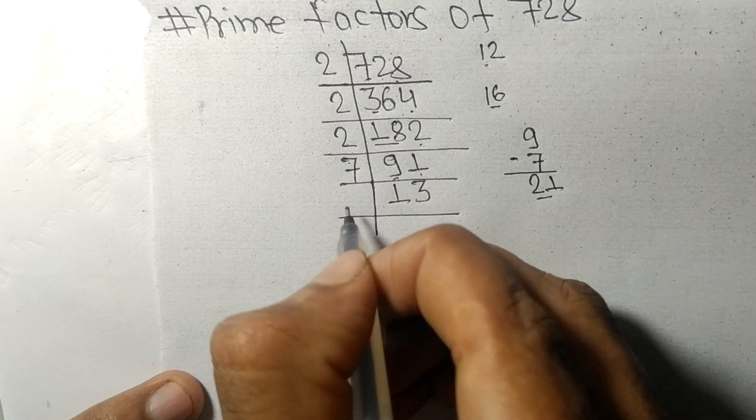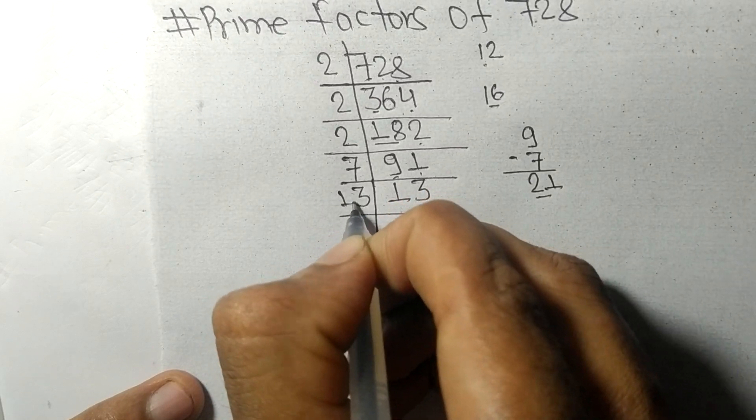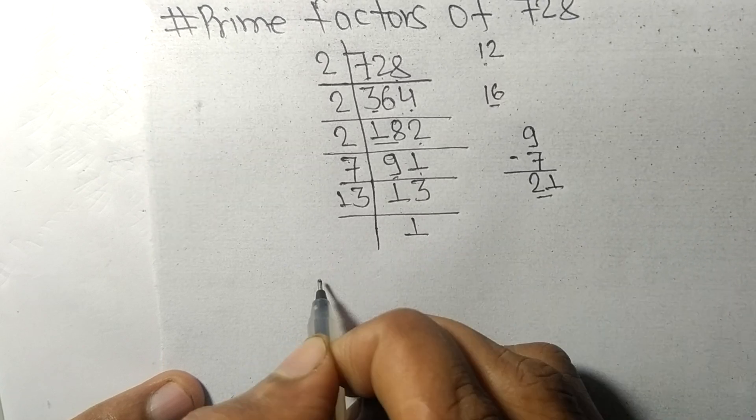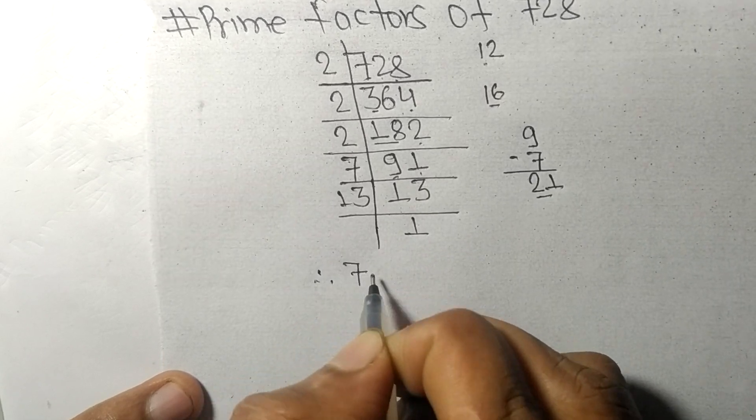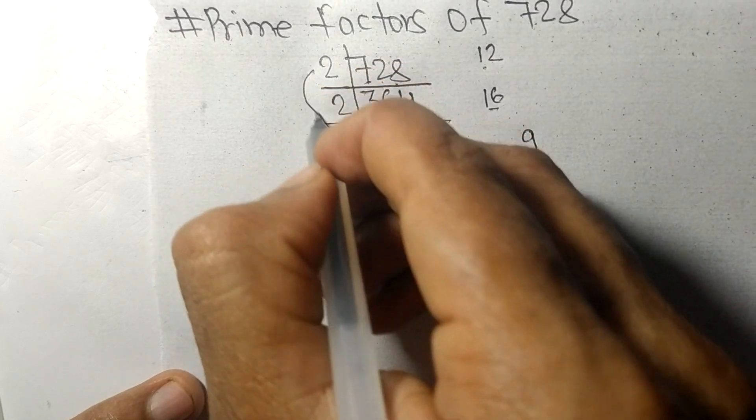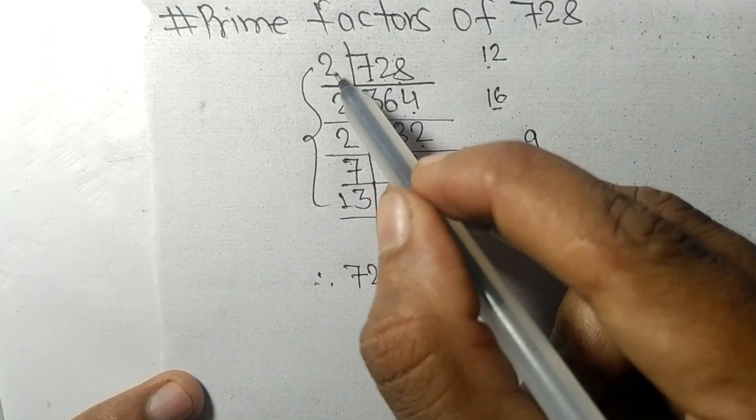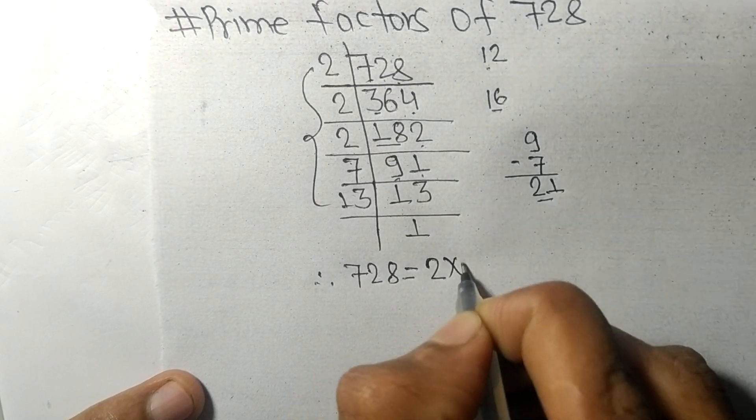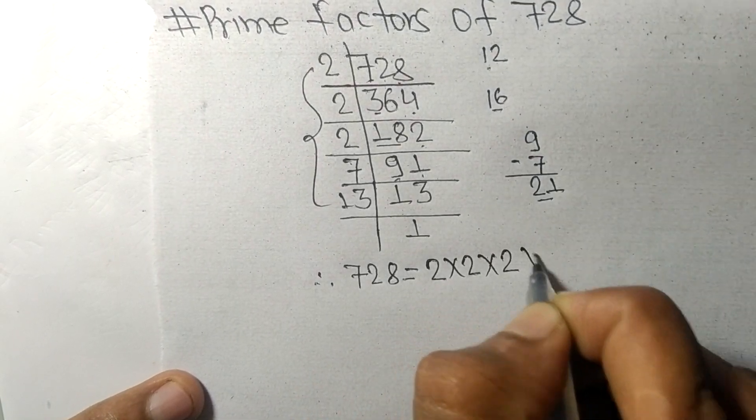Therefore, 728 is equal to, from this side it has 1, 2, 3 times 2.